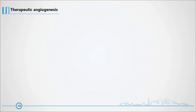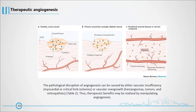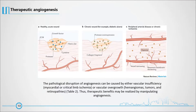The pathological disruption of angiogenesis can be caused by either vascular insufficiency — such as myocardial or critical limb ischemia — or vascular overgrowth, including hemangiomas, tumors, and retinopathies (Table 2). Thus, therapeutic benefits may be realized by manipulating angiogenesis.